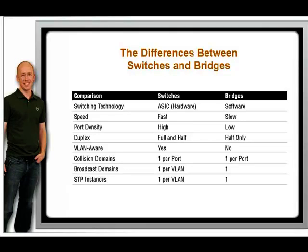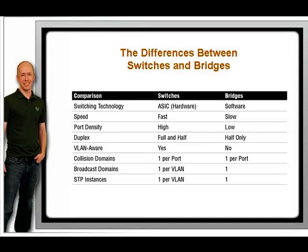A big switch, such as the Catalyst 6500 series, could do 10 times that, depending on the hardware configuration. Switches also tend to have many more ports than bridges. A bridge, by definition, has at least two ports, and they did not get much bigger than 16 ports. Switches can have hundreds of ports if you buy the appropriate expansion modules. Other differences include: switches support half and full duplex, bridges only half duplex. Switches support different port speeds — 10 and 100 megabits, for example — but a bridge's ports must all be the same speed. Switches also support multiple VLANs and an instance of spanning tree for every VLAN.